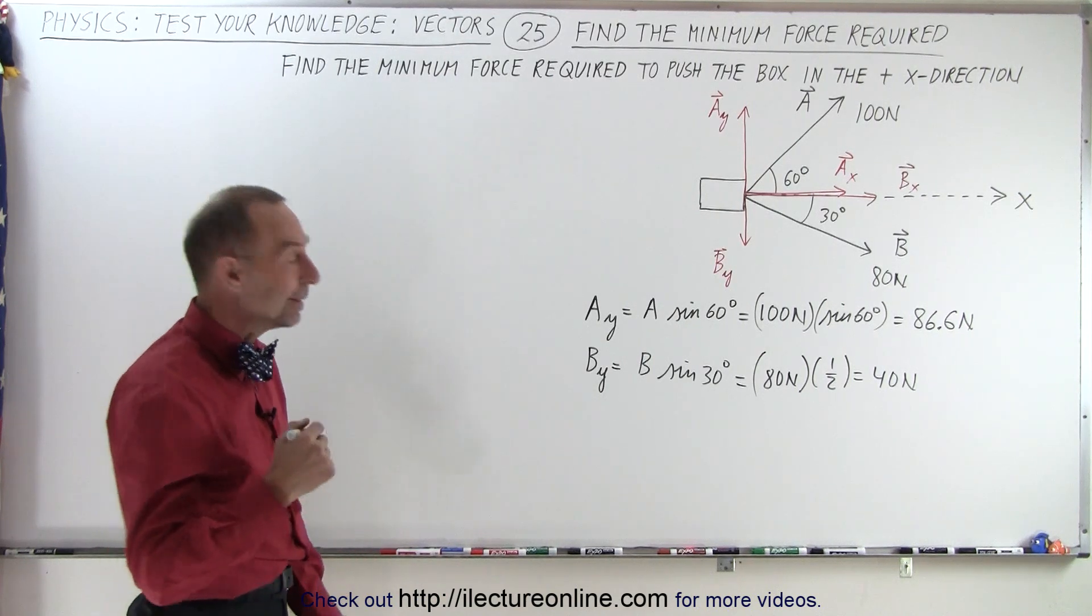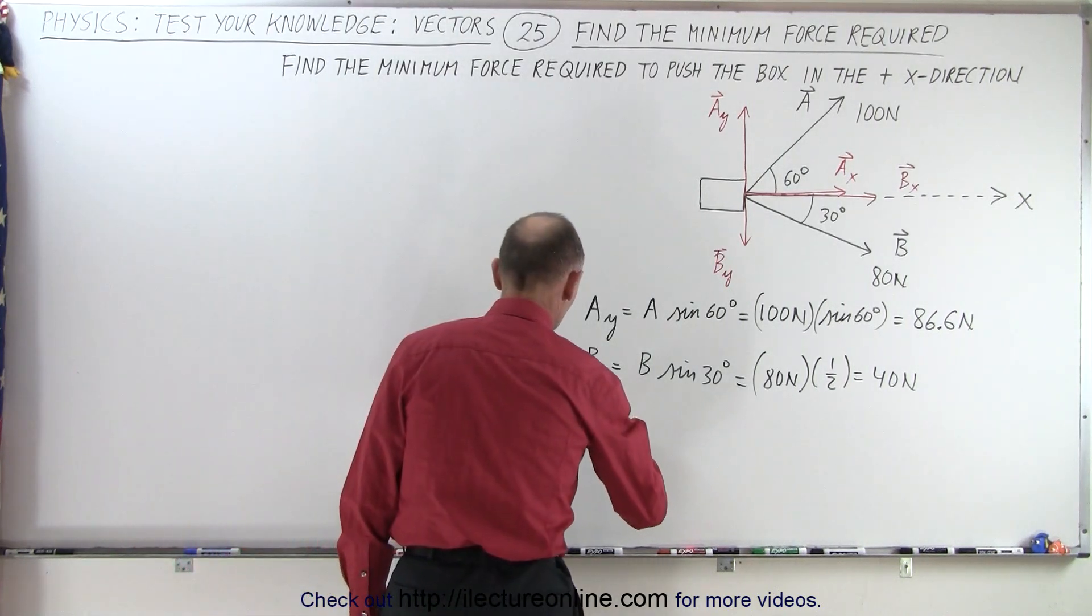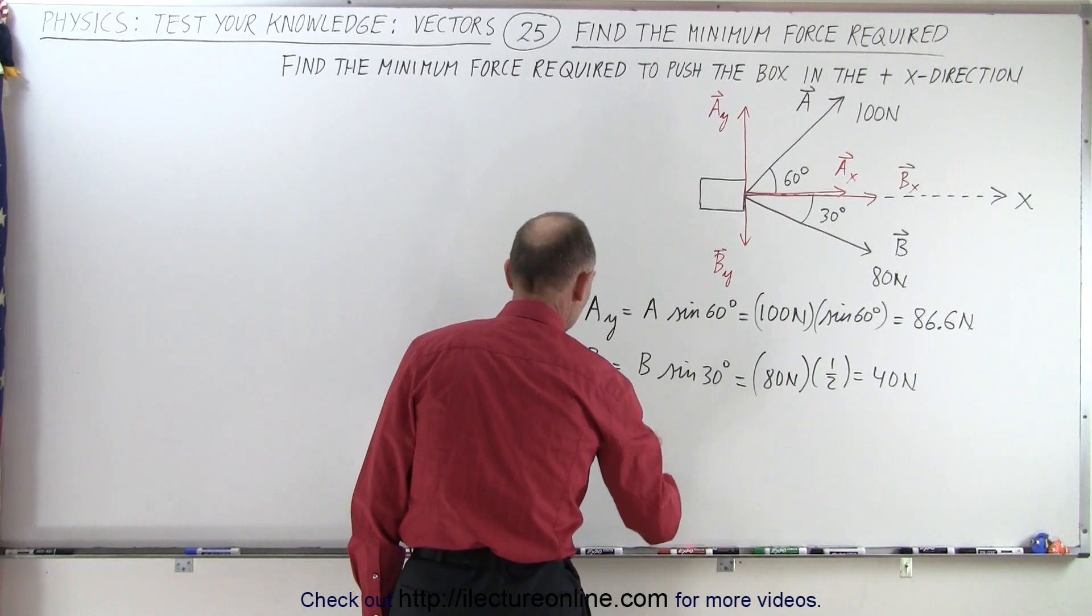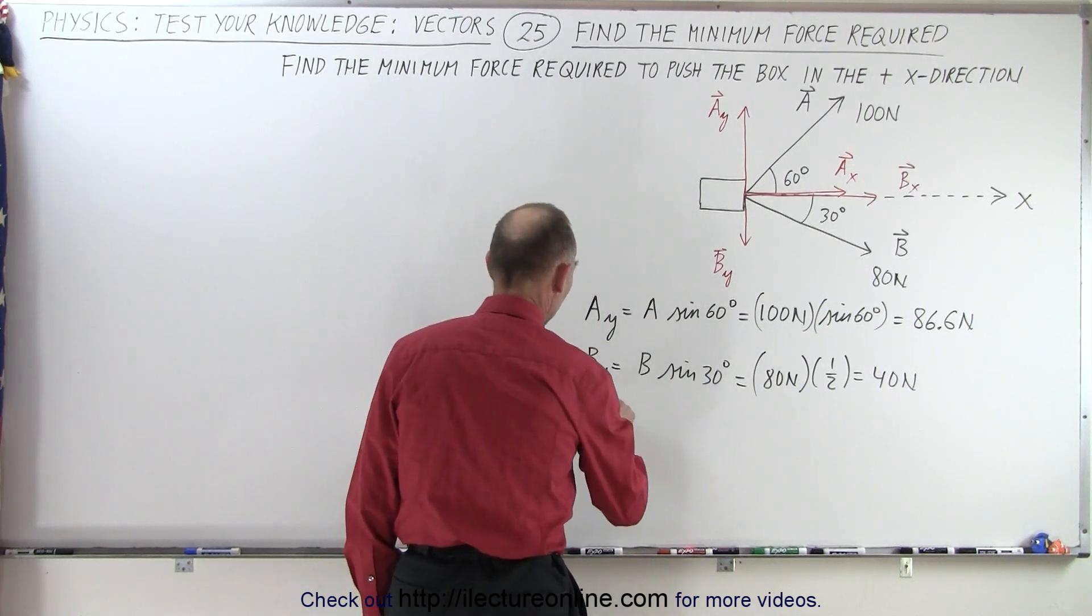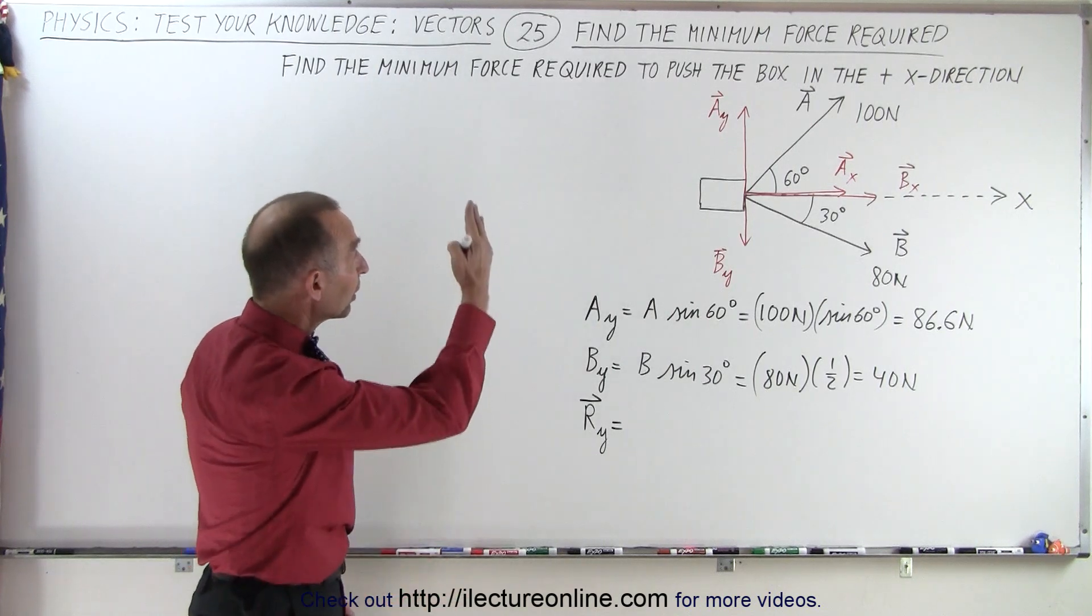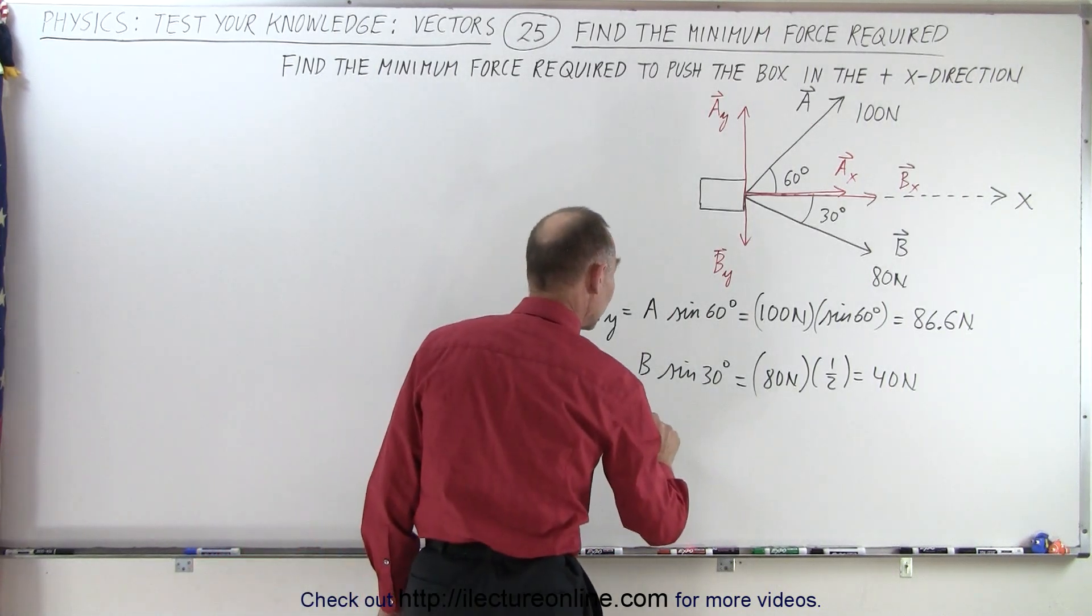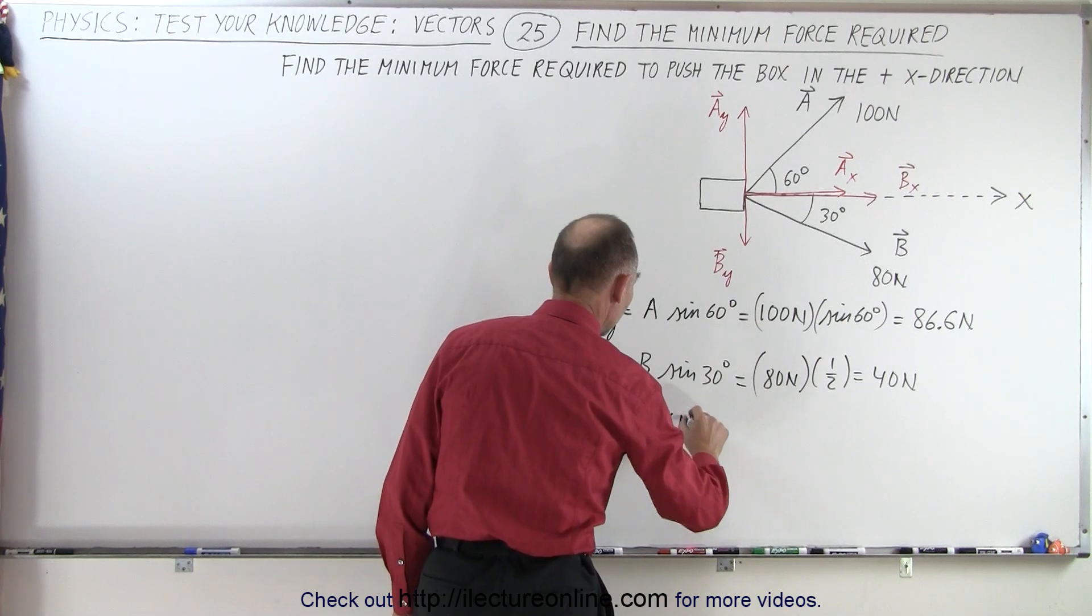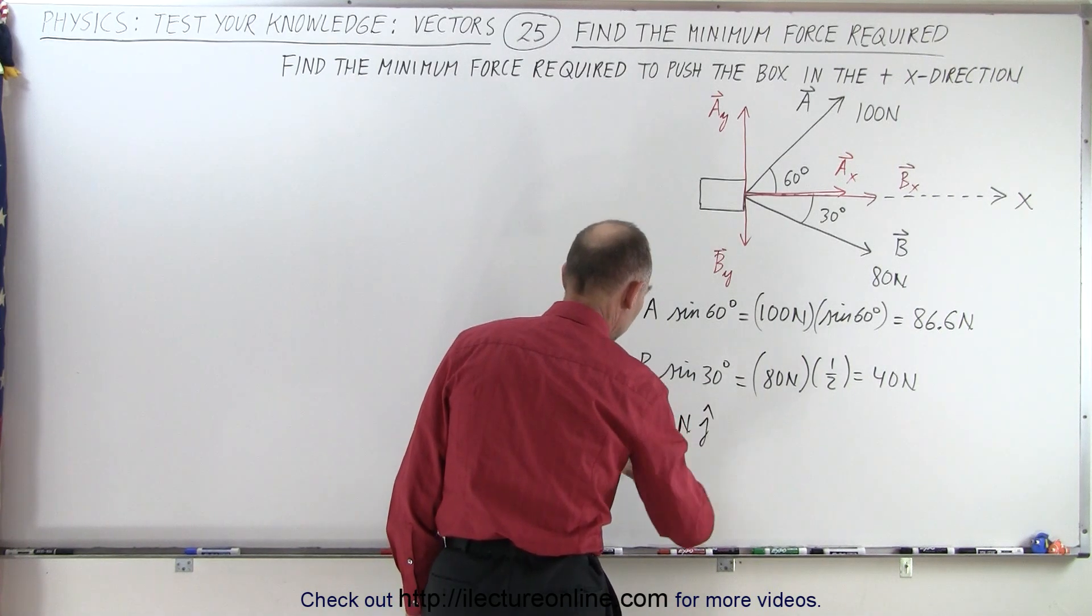Now let's find the net resultant in the y direction. So the resultant in the y direction, we're going to find it as a vector quantity. So we have a sub y pointing in the positive y direction, so that's equal to 86.6 newtons in the j direction,